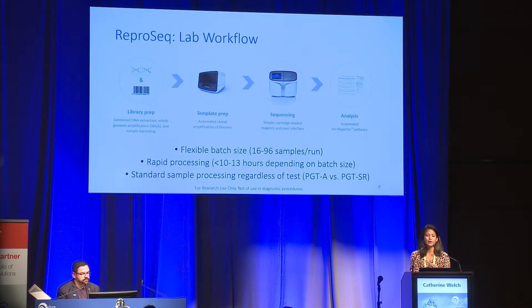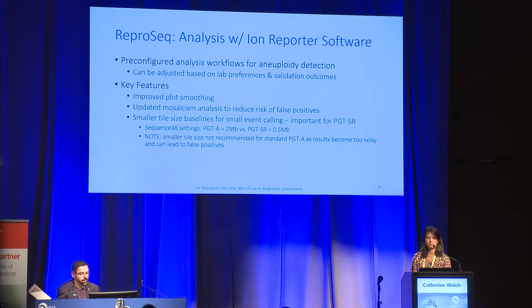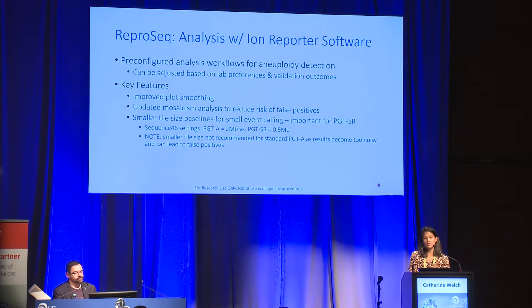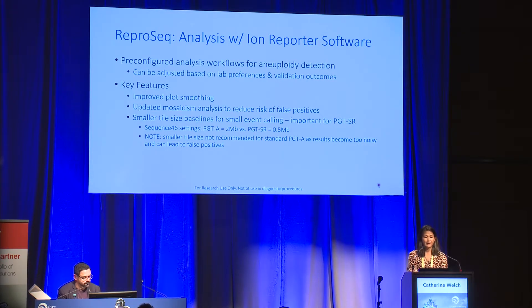The ReproSeq lab workflow is fantastic. We run 96 samples per run with very rapid processing and standard sample processing regardless of test — whether it's PGTA or PGTSR, it's the same sample processing and moves through very quickly. Pre-configured analysis workflows for aneuploidy detection can be adjusted based on lab preferences. At our lab, we are extremely transparent and like to share our thresholds with all our end users, based on our extensive validation outcomes.